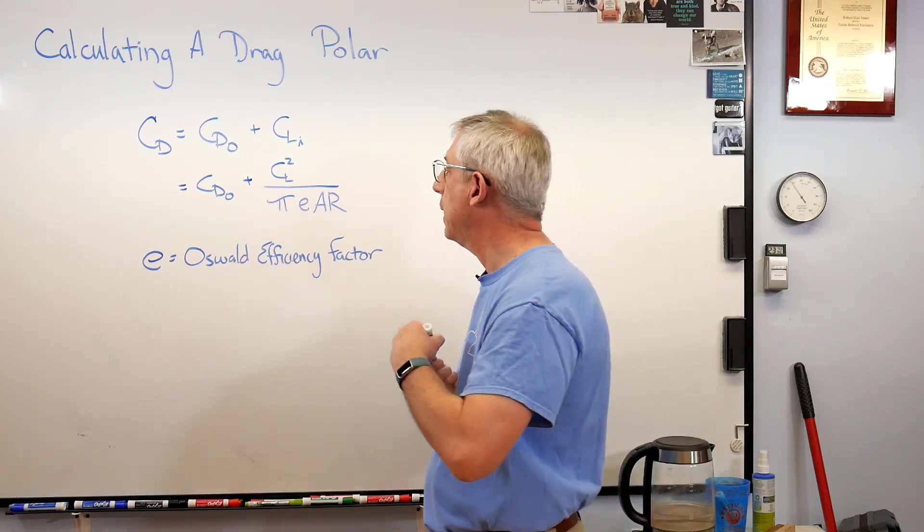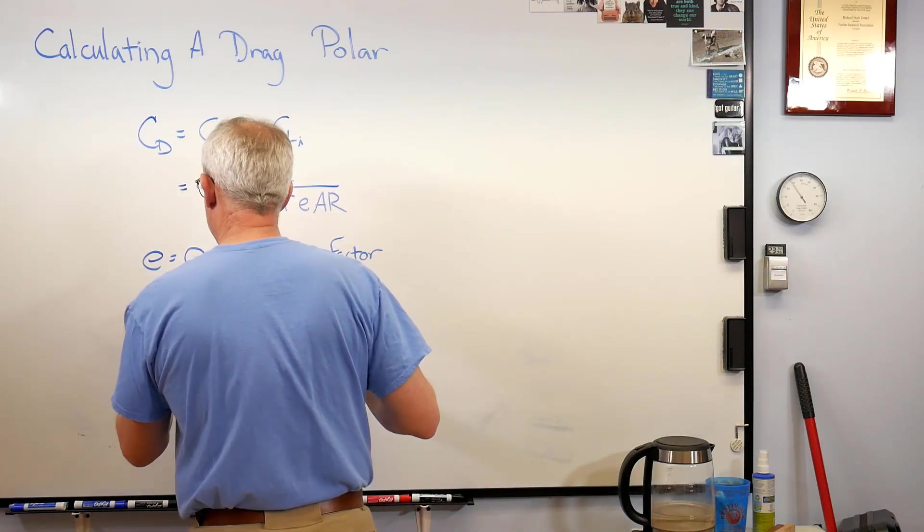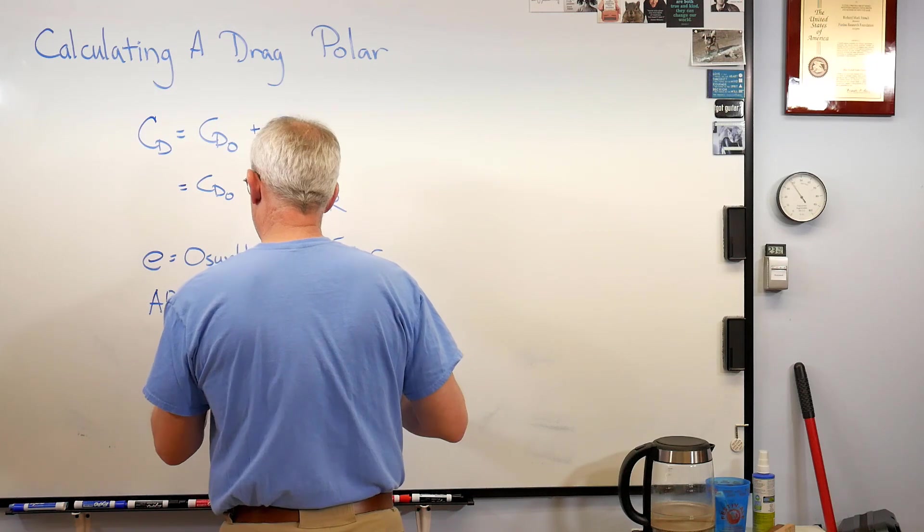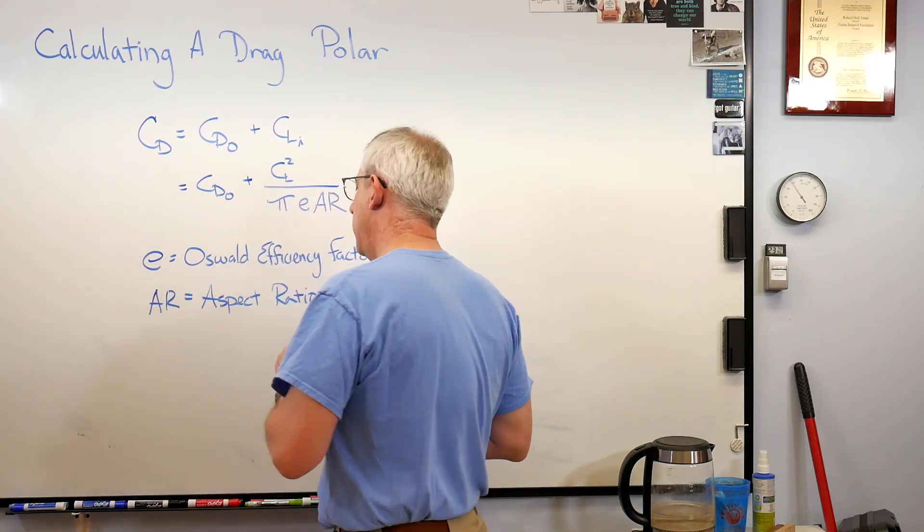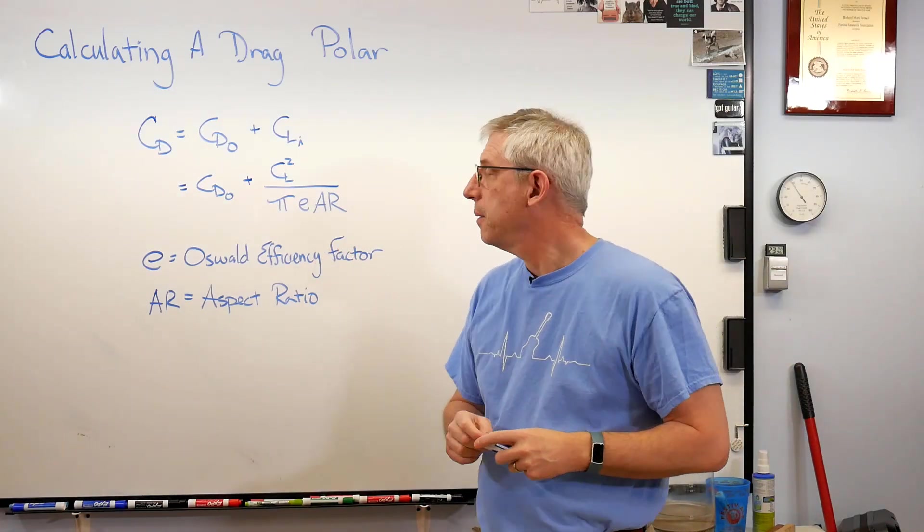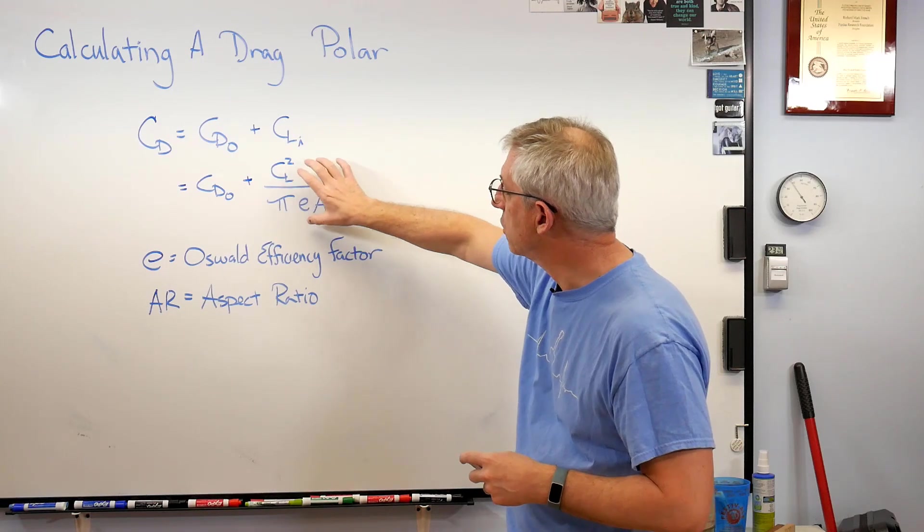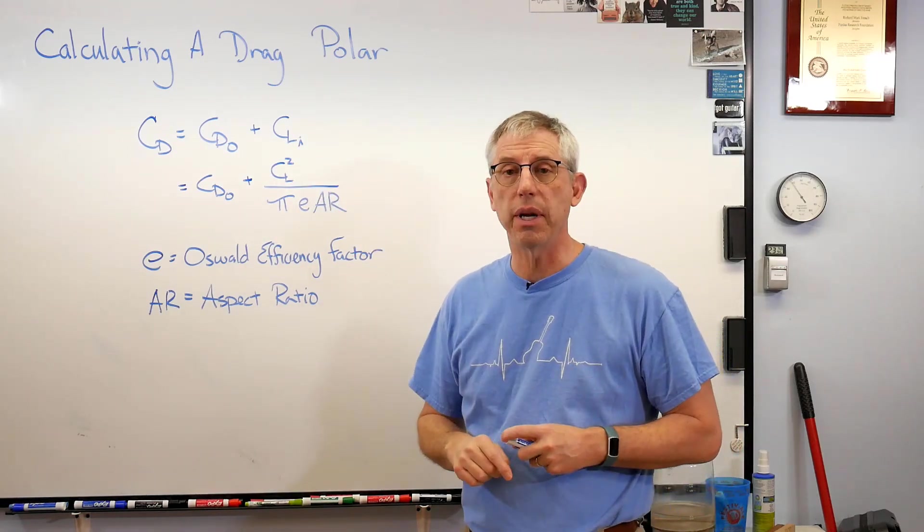The other thing you need to know is aspect ratio. Aspect ratio is just what it sounds like: it's a measure of how long and skinny wings are. The bigger the aspect ratio, the smaller this term is because the aspect ratio is in the denominator.